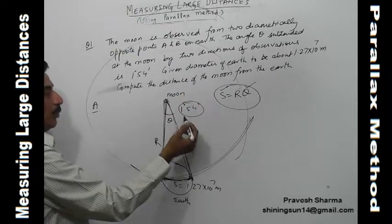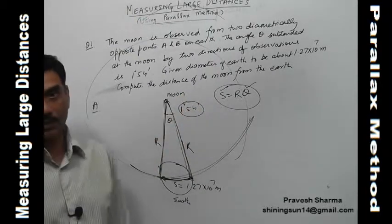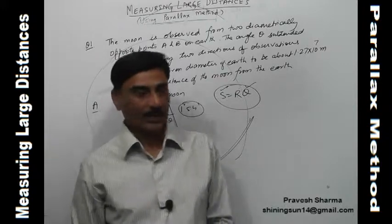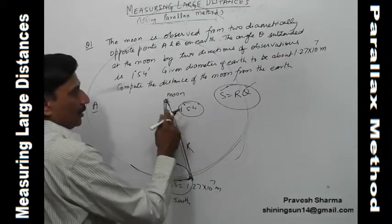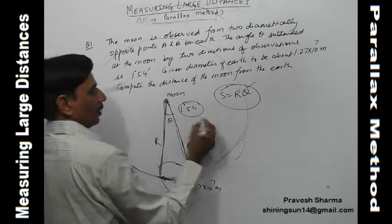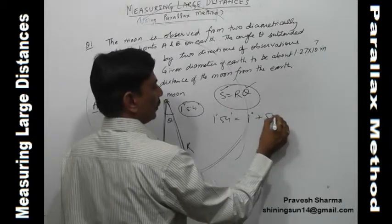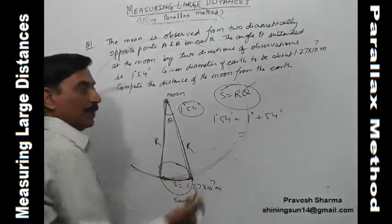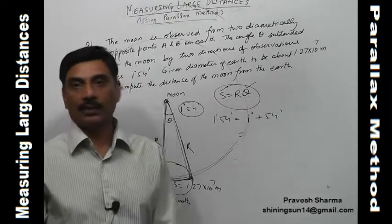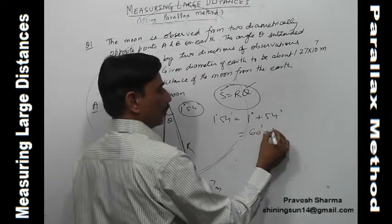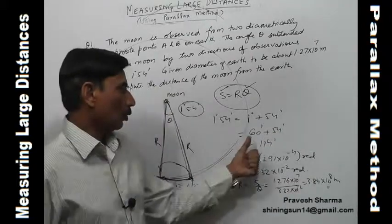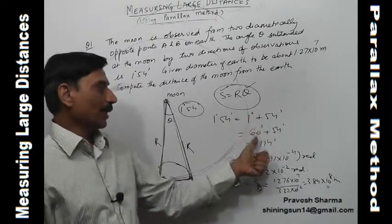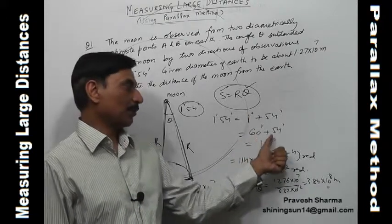The angle is given in degrees and minutes, but we need it in radians. One way is to convert the whole angle into minutes first: 1 degree 54 minutes equals 1 degree plus 54 minutes. Since 1 degree equals 60 minutes, this becomes 60 + 54 = 114 arc minutes. Now we know 1 arc minute in radians, so 114 arc minutes can be converted to radians.